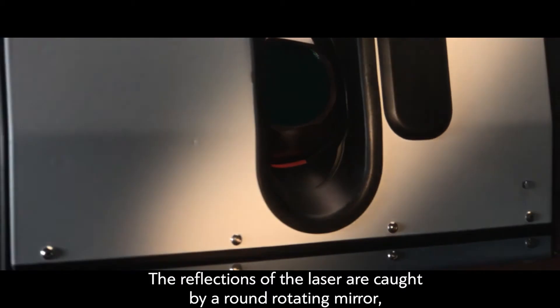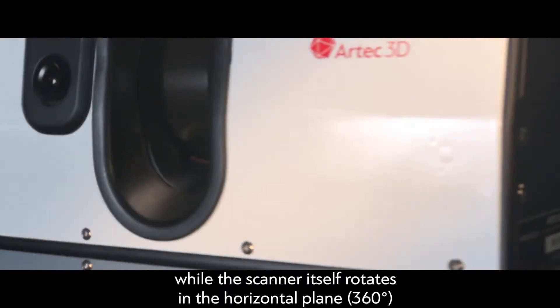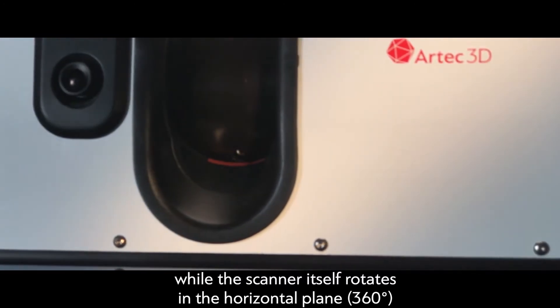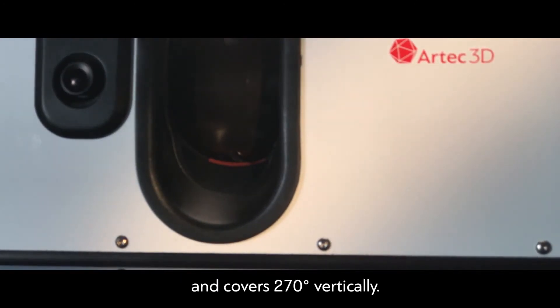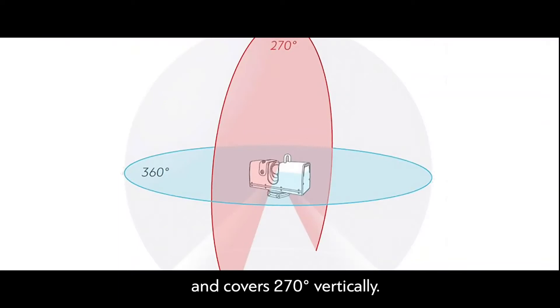The reflections of the laser are caught by a round rotating mirror, while the scanner itself rotates in a horizontal plane, 360 degrees, while the scanner covers 270 degrees vertically.